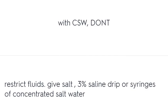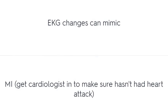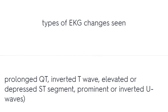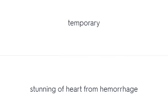With cerebral salt wasting (CSW), restrict fluids and give salt — either a 3% saline drip or syringes of concentrated salt water. EKG changes can mimic MI. Types of EKG changes seen include prolonged QT, inverted T wave, elevated or depressed ST segment, and prominent or inverted U waves — this represents temporary stunning of the heart from the hemorrhage.